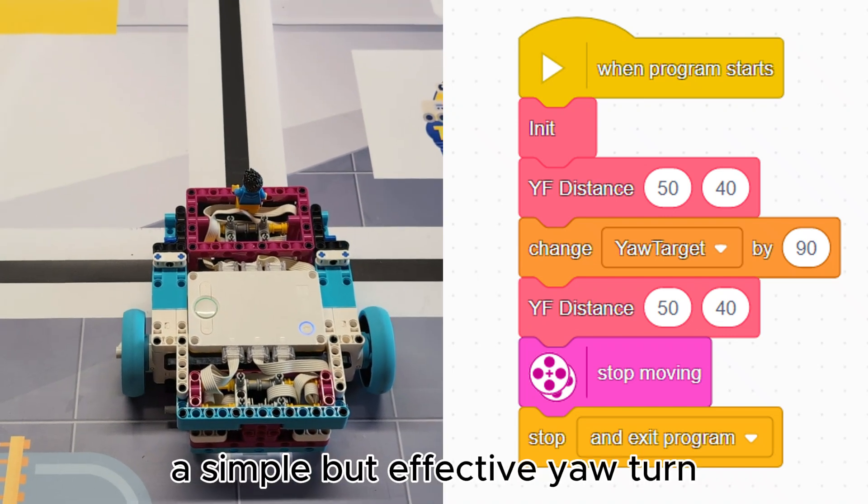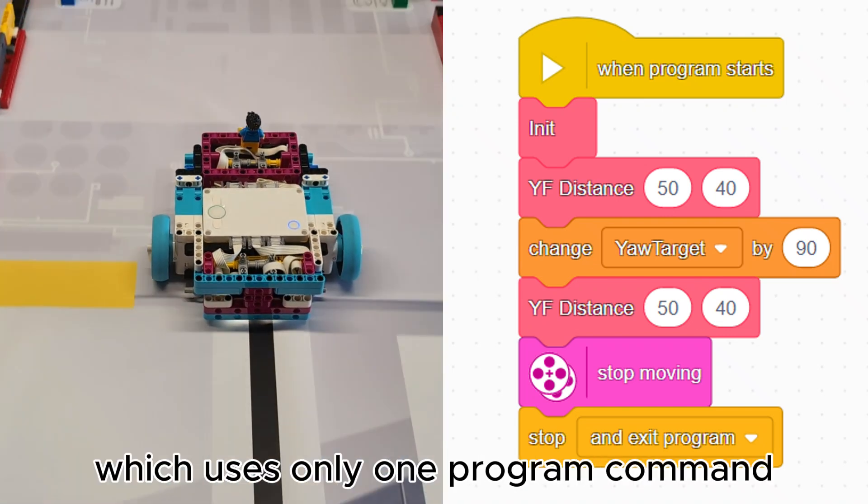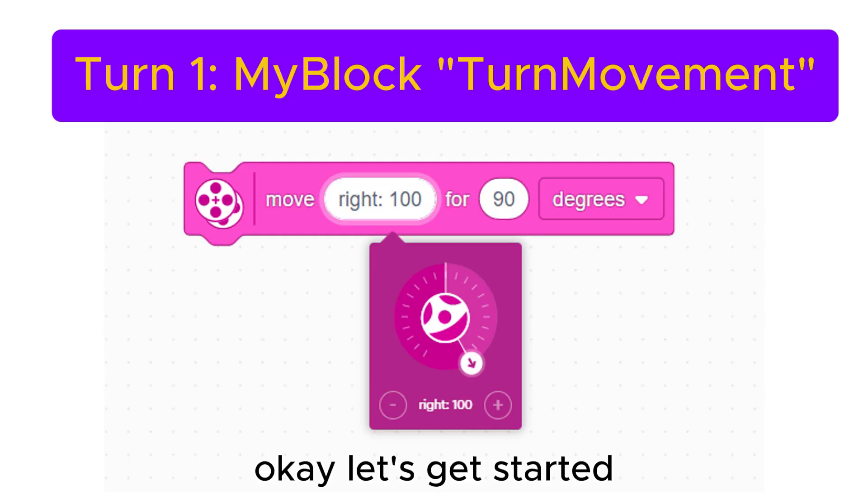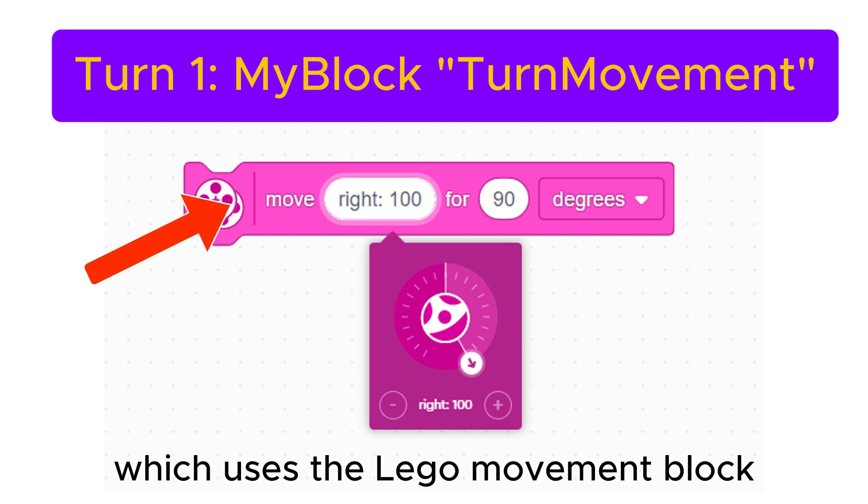Finally, I will show a simple but effective U-turn which uses only one program command. Okay, let's get started with turn number one which uses the Lego movement block.